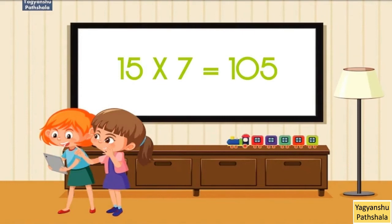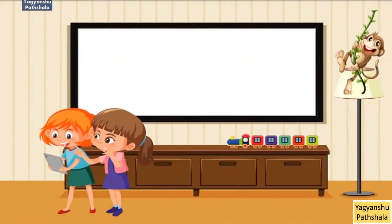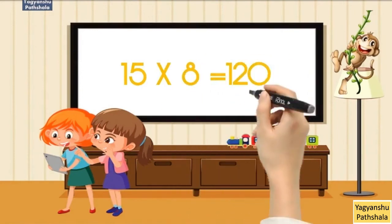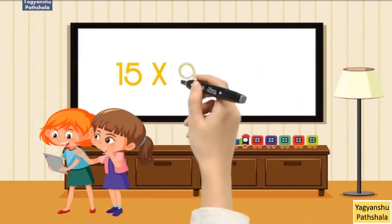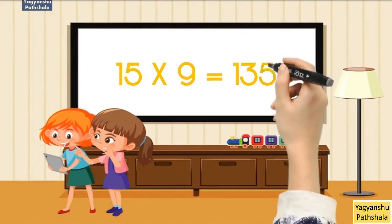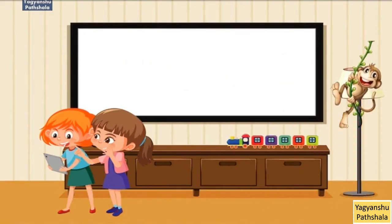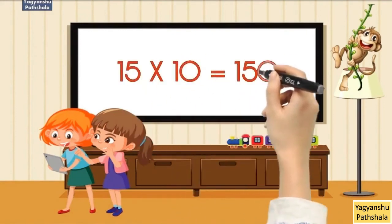15 times 7 equals 105. 15 times 8 equals 120. 15 times 9 equals 135. 15 times 10 equals 150.